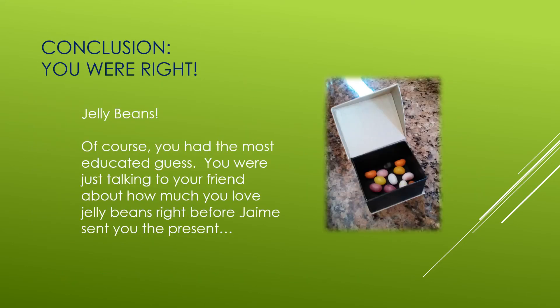When you open the gift, you see a box full of jelly beans — hypothesis number one was correct! This makes sense because you had the most educated guess: right before Jaime sent the gift, you were speaking with him about how much you love jelly beans. That background information informed your hypothesis. Scientists generally don't hypothesize in the dark — they use background information to make a good educated guess, then collect data to conclude whether the hypothesis was correct or not.